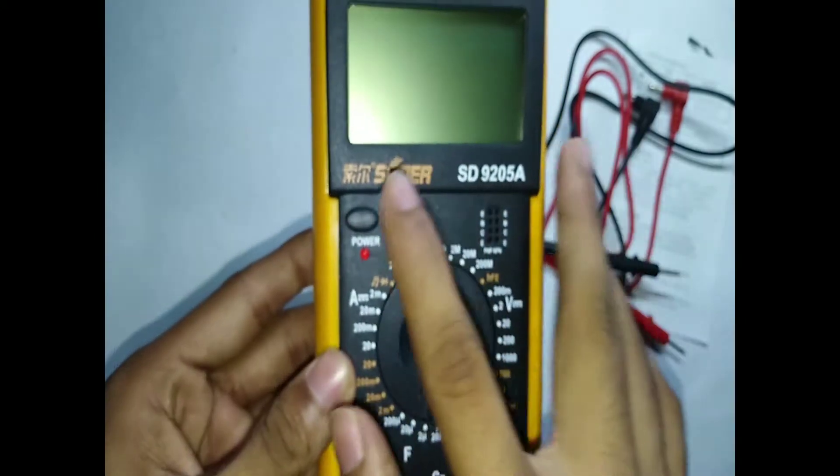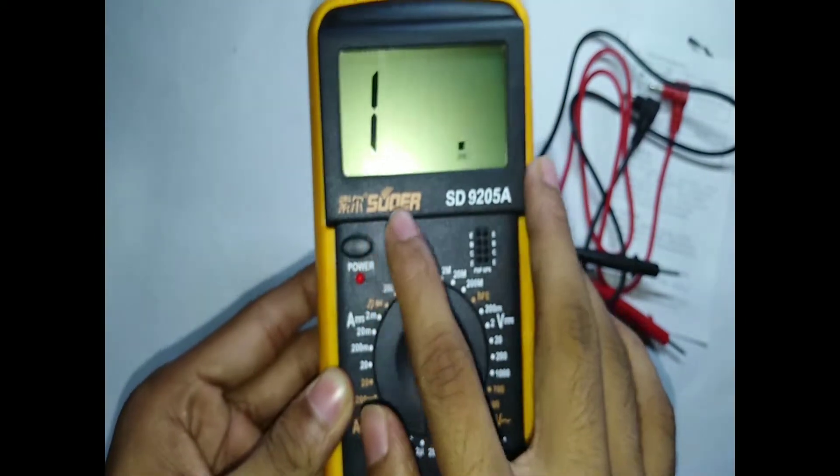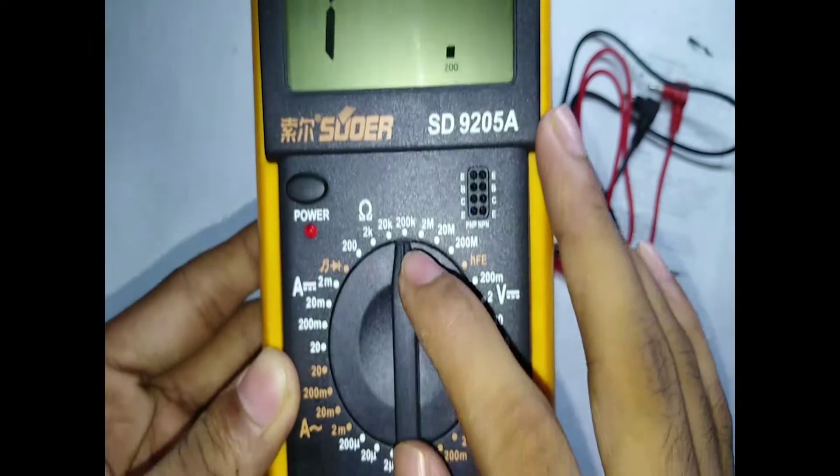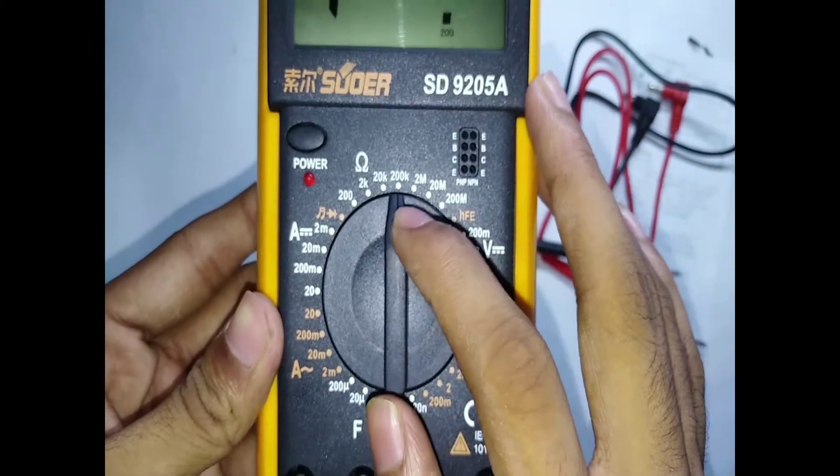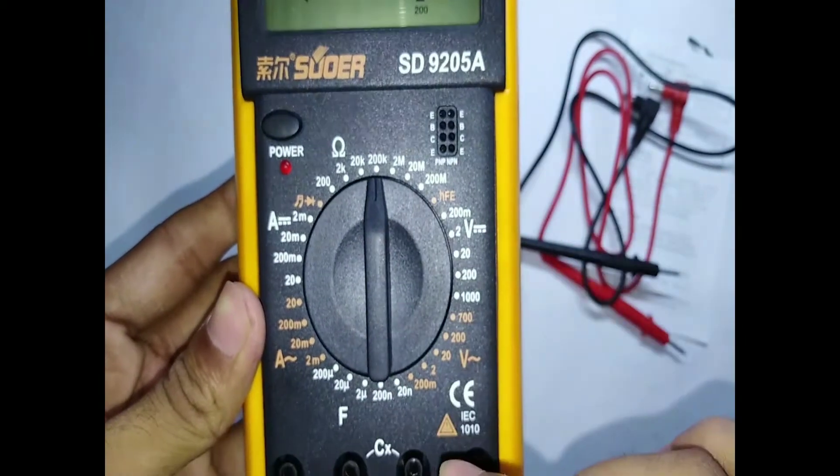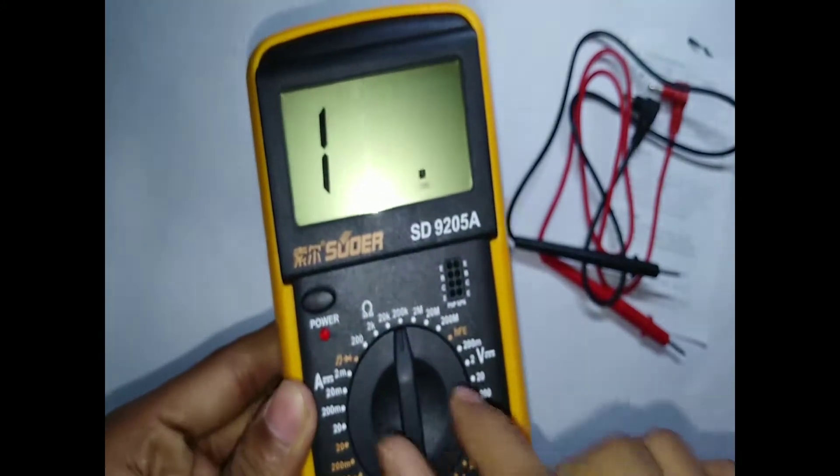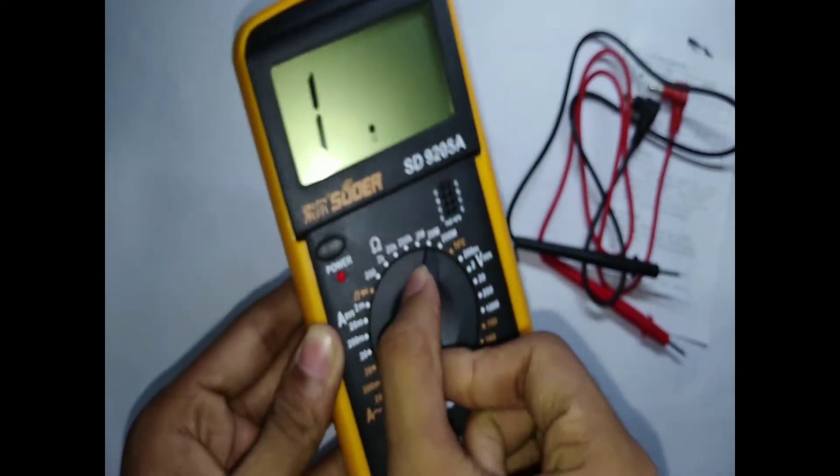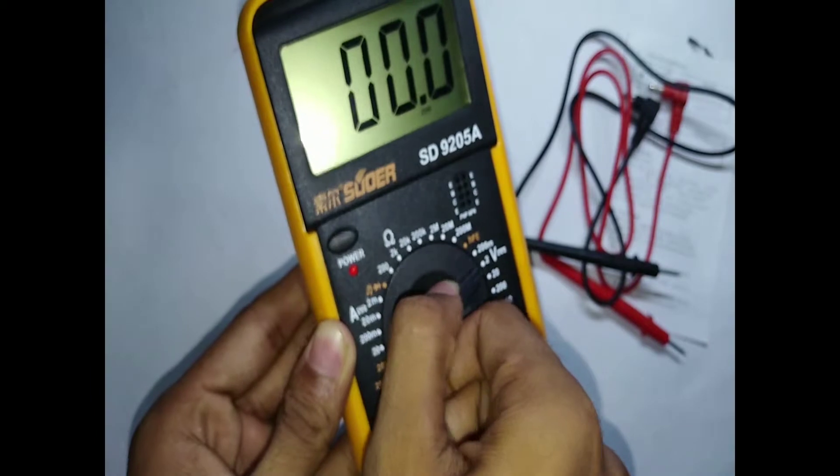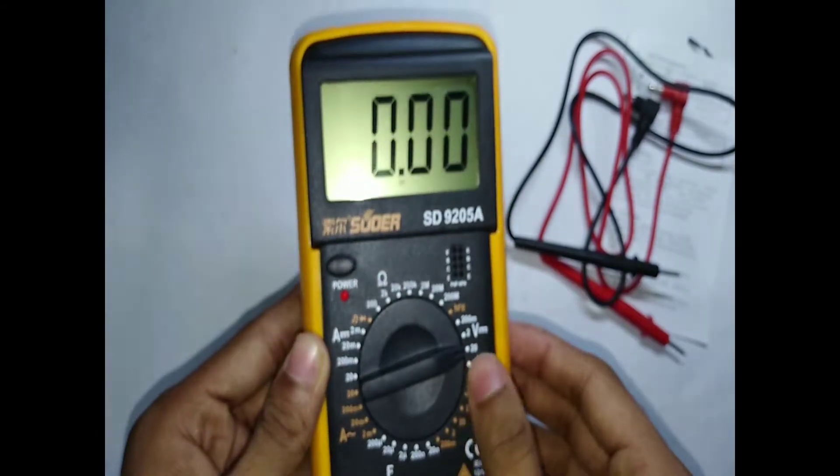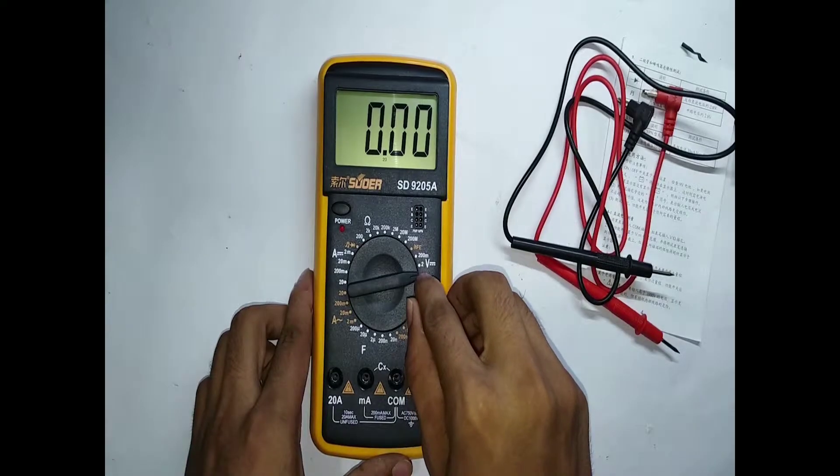This is the negative test leads. Let's open the power button. If you want to measure something, just move the dial. I'm gonna measure voltage, so I move the dial to the DC voltage.